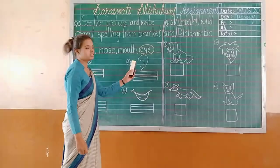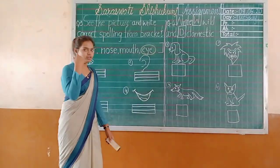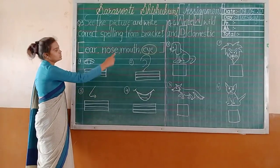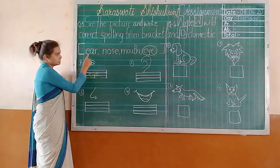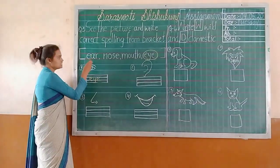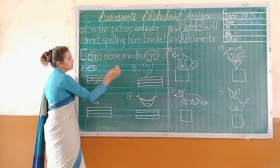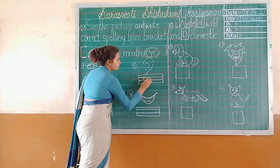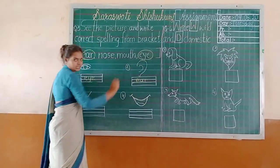Next, the second picture — ear. From the ear you can hear. So where is the spelling of 'ear'? First one is here: E-A-R. Yes, this is ear. So circle that and write it in the box. E-A-R. Ear.